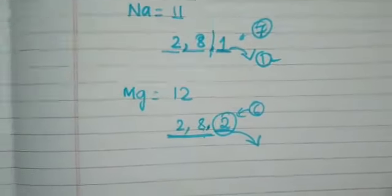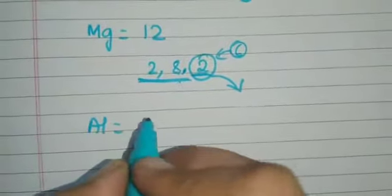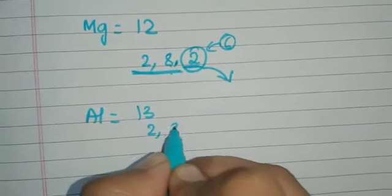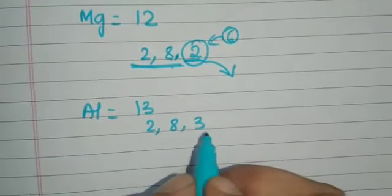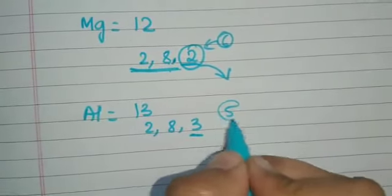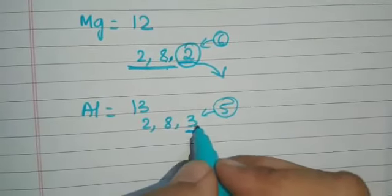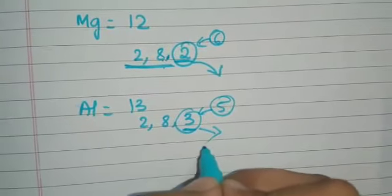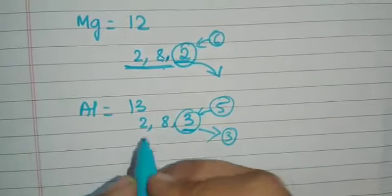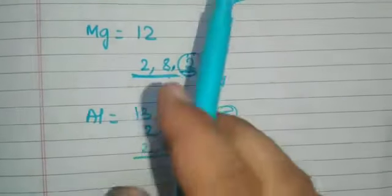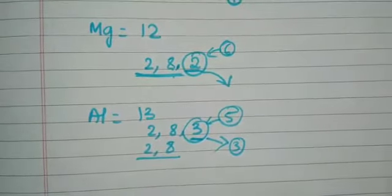Now let us take aluminium. Aluminium has atomic number 13 — its configuration is 2, 8, and 3. It has three electrons in the outermost shell and requires five more electrons to complete the octet structure. Since no other element is ready to donate five electrons, aluminium loses those three electrons and becomes stable with configuration 2 and 8.